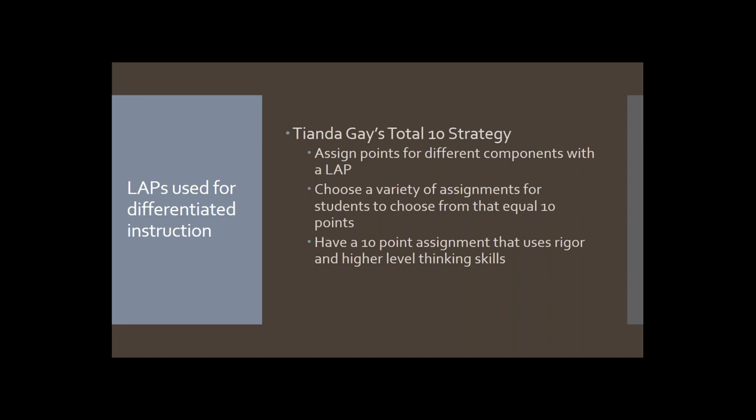The example Tianda uses is making a cake: 2 points to find and write a recipe, 4 points to build a recipe book, 8 points to make a cake and present on it, and 10 points to make the cake while recording yourself like a baking show — and she gets to sample and judge it. It's set up so students can't just do the easy assignments — doing 4+2 only gets 6 points, so they have to do something with more rigor to reach 10.